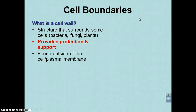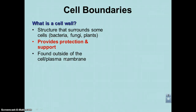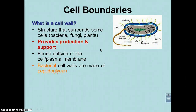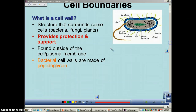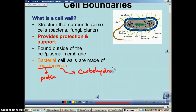The cell wall is a rigid structure that surrounds some cells — for example, bacteria, fungi, and plants. You will not find a cell wall in an animal cell. Its job is to provide protection and support, and it's found outside of the cell or plasma membrane. The cell wall doesn't really keep materials from going in and out; it's just there to help support, protect, and give strength to the cell.